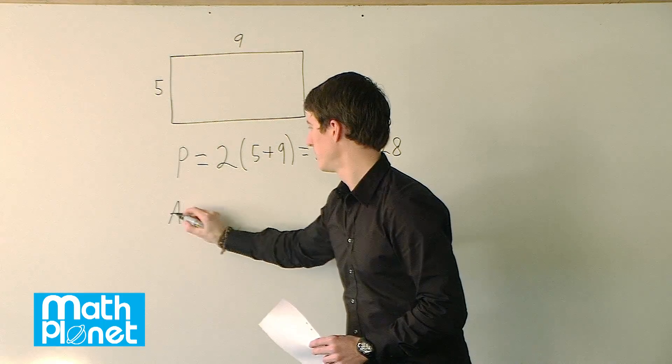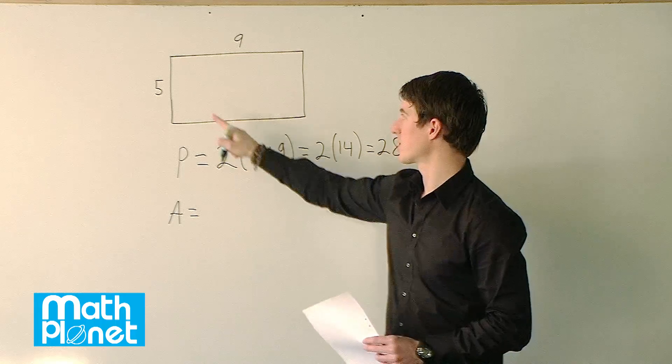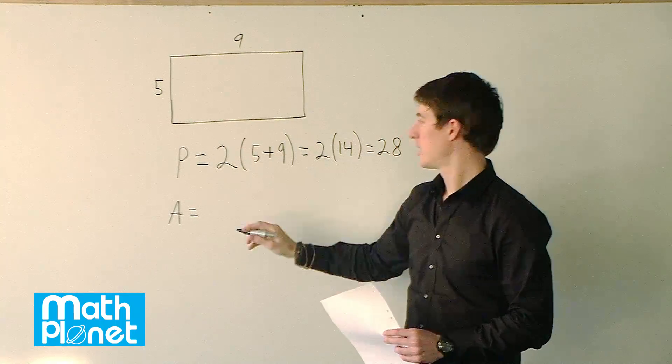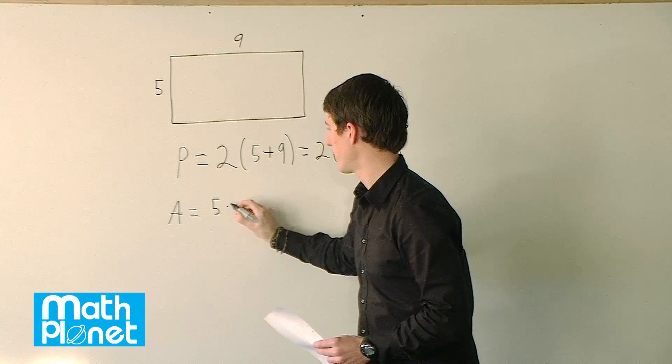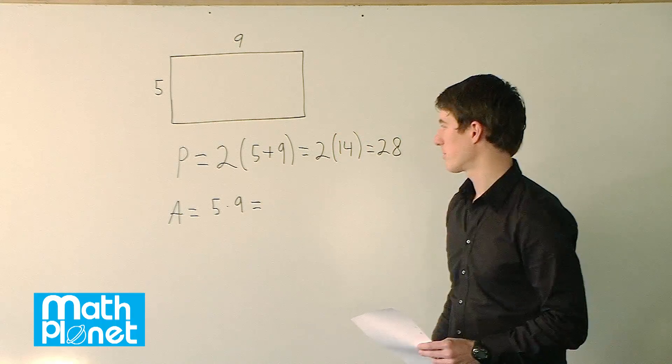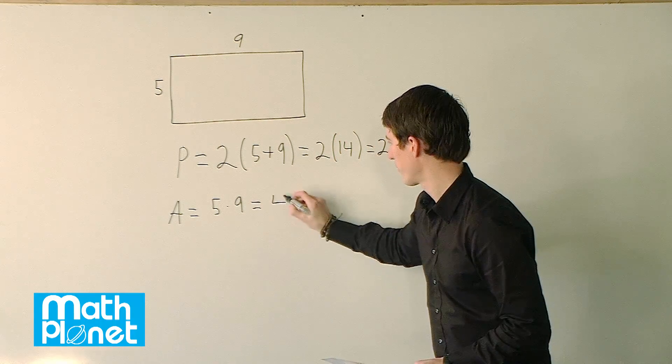To calculate the area, we want to say it's just base times width. So it's simply 5 times 9. And 5 times 9 is of course just 45.